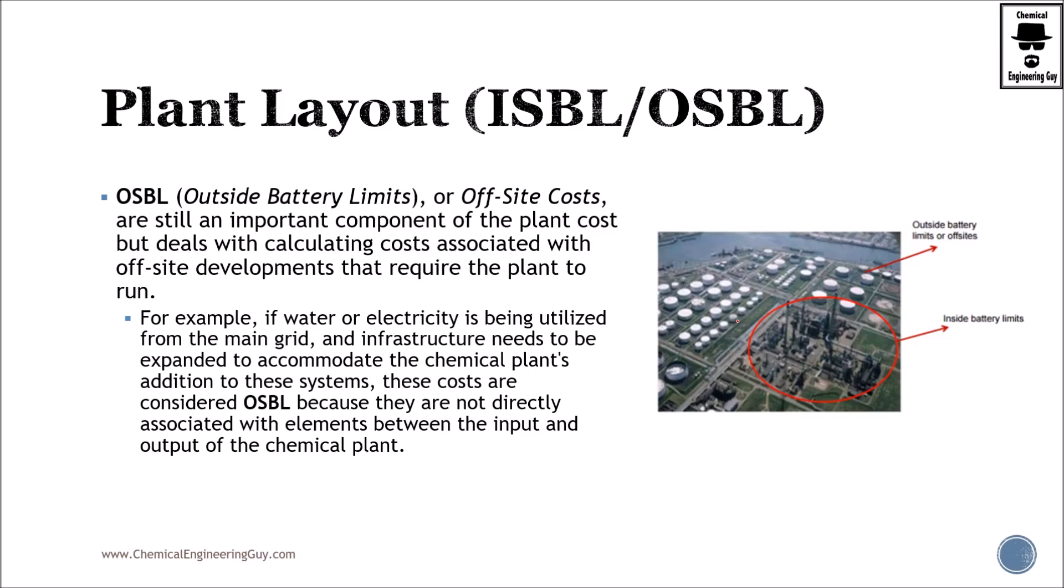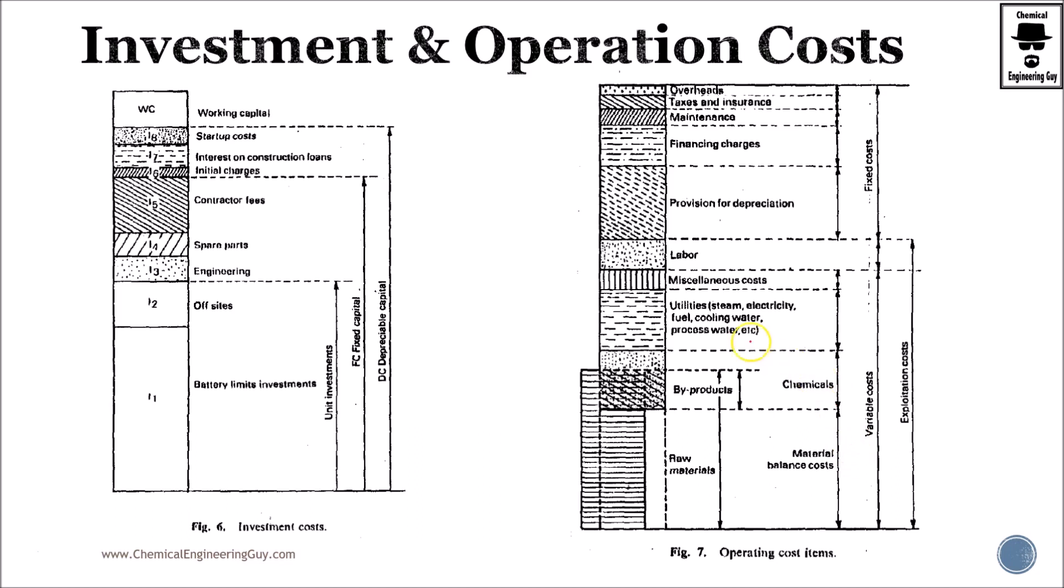And outside battery limits, what is this? These are the so-called off-site costs. Are costs that they will be related to your plant operation, but technically are not of the plant. So they are still an important component, but deals with calculating costs associated with off-site developments that require the plant to run. For example, water or electricity are used. You will need an infrastructure needed to accommodate the chemical plants, the necessities. These are considered to the OSBL. So for instance, if you need a tank storage unit, even though it's not present here, you will need to account it, especially if you're talking about ISBL and OSBL. And technically they are associated. You could say those are indirect costs, but you know that even though they are indirect, they affect our operation. And let's check out this one in another video.